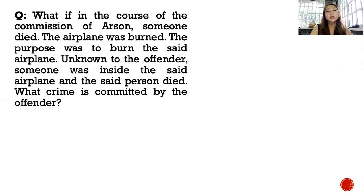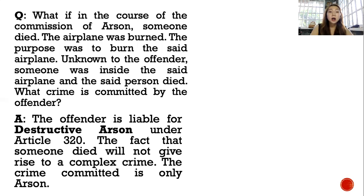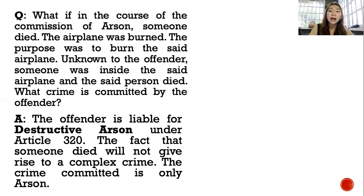Problem: In the course of the commission of destructive arson, an airplane was burned. Unknown to the offender, someone was inside the airplane and that person died. What crime was committed? The offender is liable for destructive arson under Article 320. The fact that someone died will not give rise to a complex crime — the crime committed is only arson, and the homicide is absorbed. After the last paragraph of Article 320, it states that if as a consequence of the acts constituting arson death results, the mandatory penalty of death shall be imposed. The crime is still only arson — there is no such thing as arson with homicide.